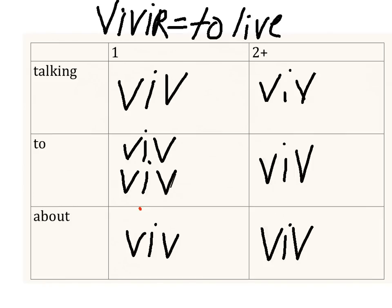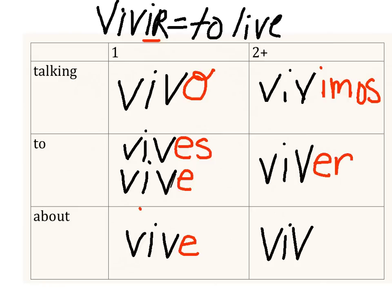So let's look at the endings for a verb that ends in IR. We have a lot of the same endings as the ER verbs — E, E, E — but our big difference is right here: the IR verbs for the nosotros form have an ending that's IMOS. Vivimos. That's our big difference from the other set; otherwise everything else is pretty much the same. So let's have you conjugate some verbs.